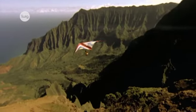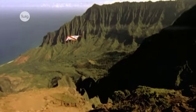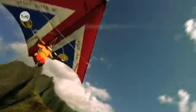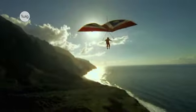Convection currents in the air allow hang gliders to fly. The ground is heated by the sun's rays.